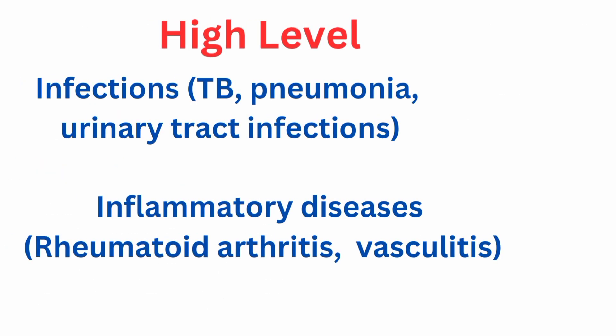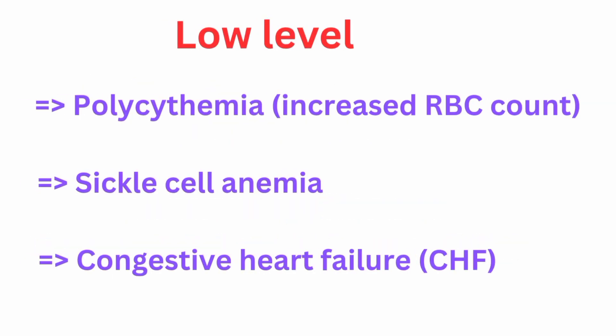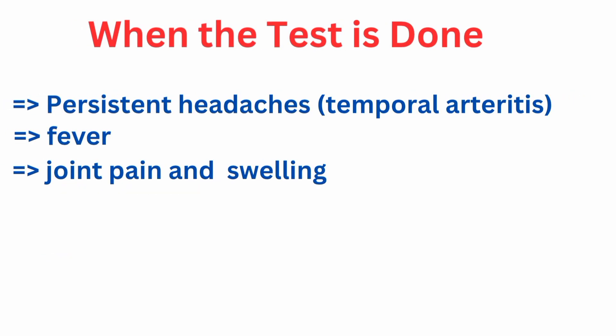ESR high level: symptoms and conditions include infections such as TB or pneumonia, urinary tract infection, and inflammatory diseases like rheumatoid arthritis and vasculitis. ESR low level is seen in polycythemia, increased RBC count, sickle cell anemia, and congestive heart failure (CHF). When the test is done: persistent headaches or temporal arteritis, fever, joint pain, and swelling.